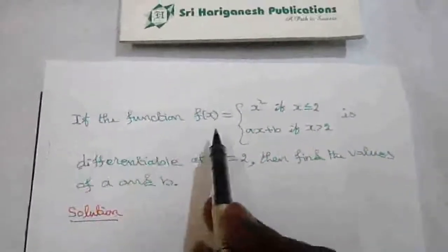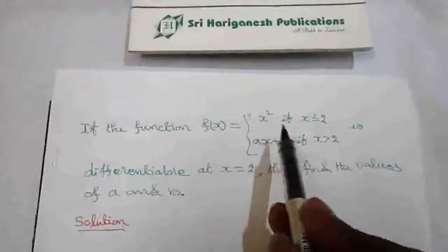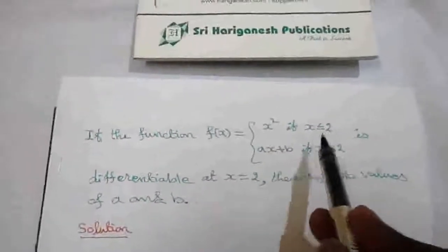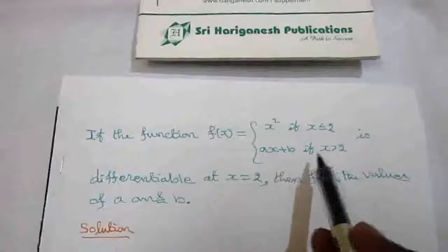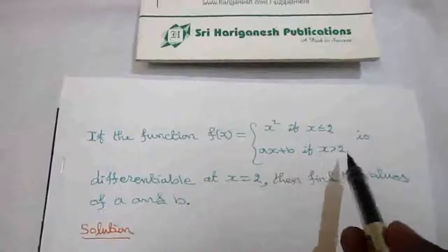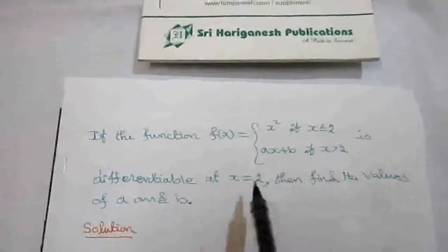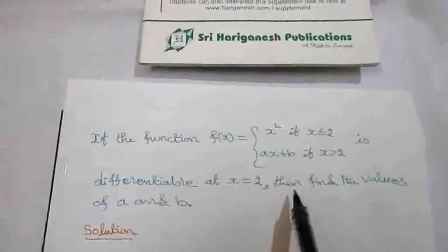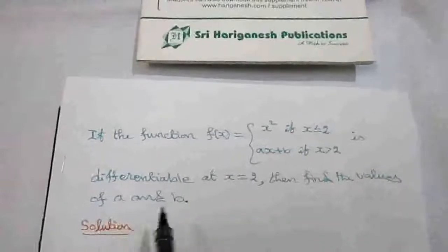If the function f(x) is equal to x squared, if x is less than or equal to 2, and ax plus b, if x is greater than 2, and is differentiable at x equal to 2, then find the values of a and b.